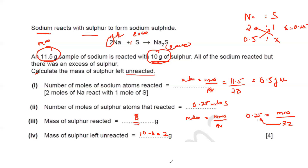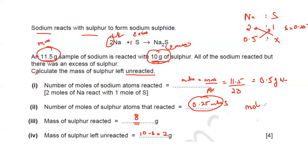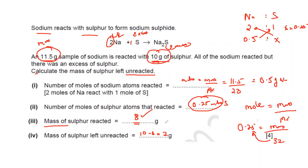A student asked why the answer is 8. We got the moles of sulphur reacted, which is 0.25. Using the formula moles = mass ÷ molar mass, rearranging gives mass = moles × molar mass = 0.25 × 32 = 8 grams of sulphur reacted. Since we had 10 grams and 8 reacted, unreacted sulphur is 10 minus 8, which equals 2 grams.